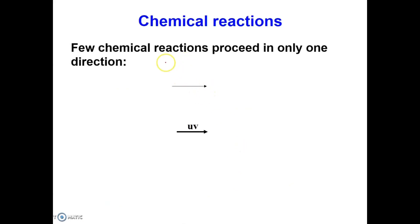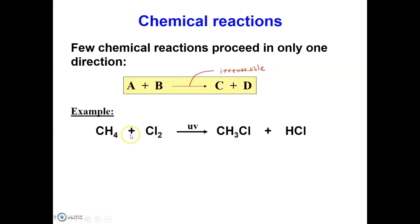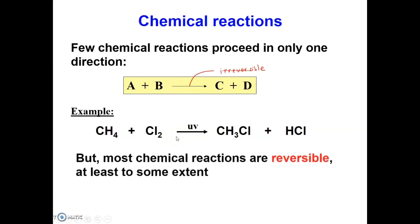Few chemical reactions proceed in one direction only. For example, reactants A and B react together to produce products C and D, and this single arrow shows that the reaction is irreversible. For example, methane gas CH4 reacts with chlorine gas to produce CH3Cl and HCl gas under sunlight, and the arrow shows that the reaction is irreversible. But most chemical reactions are reversible, at least to some extent.